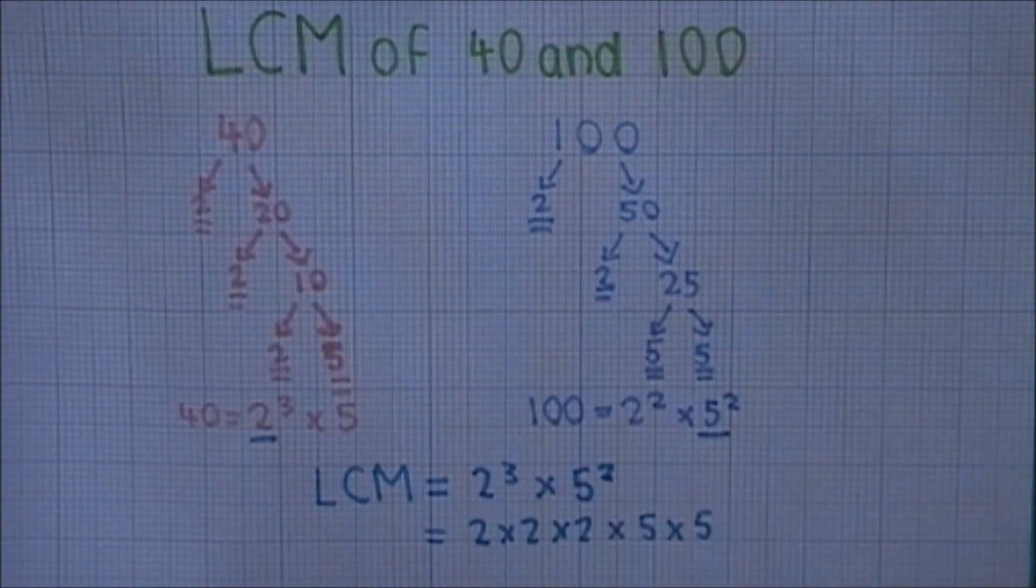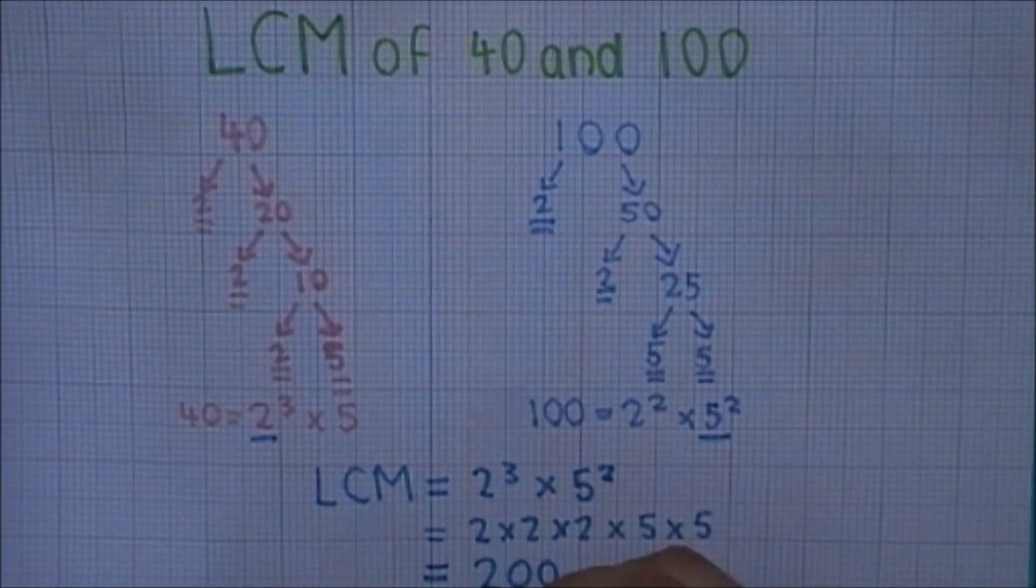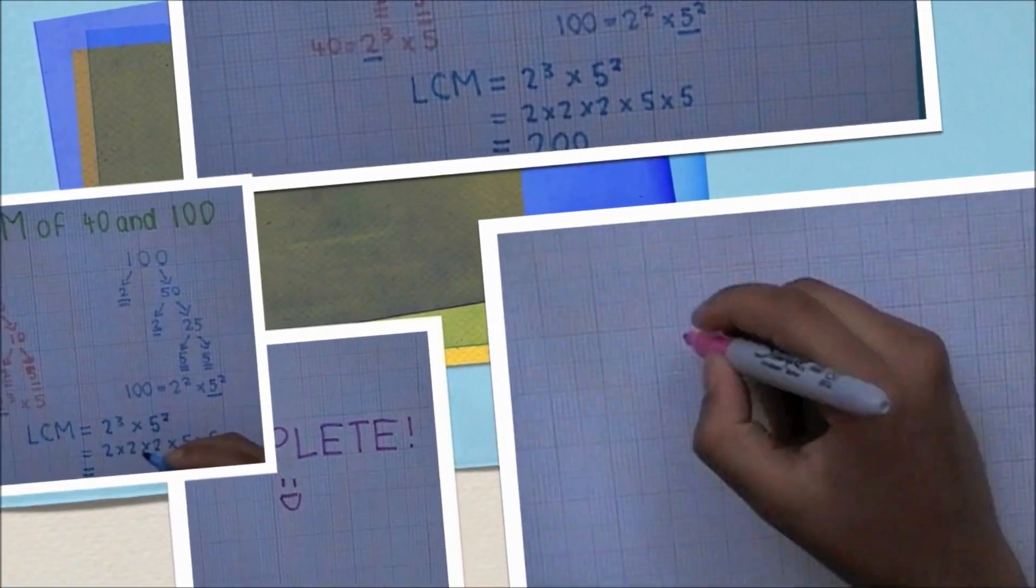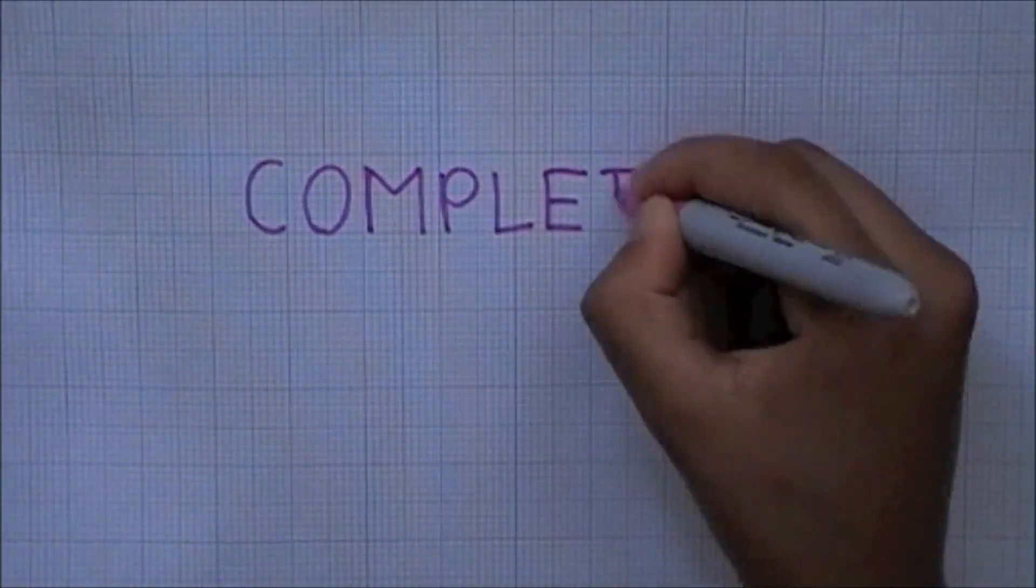Lastly, multiply these numbers together to give you the LCM, which is, as you probably would have expected, 200. Complete.